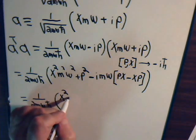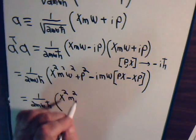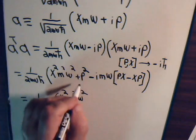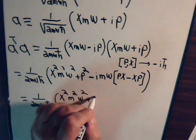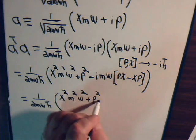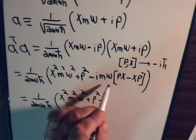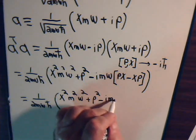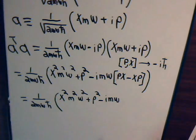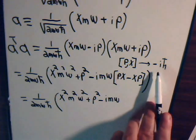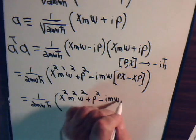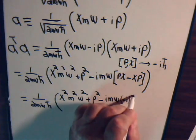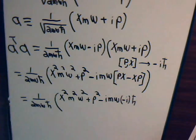Then, we have x squared, m squared, omega squared, plus p squared, minus i m omega.